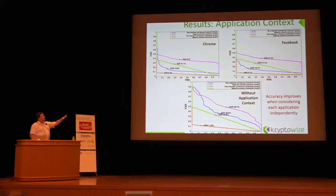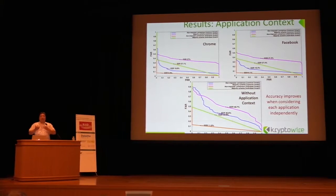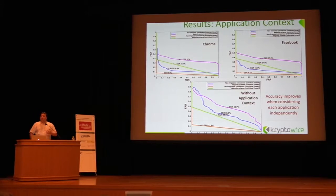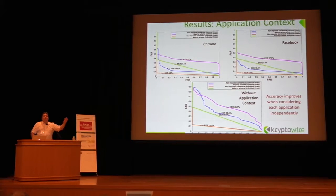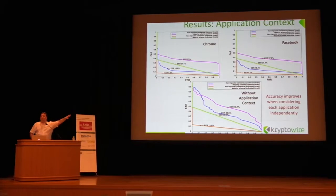Different applications yield different results, but the applications were fairly consistent individually. When I summed up the applications and removed what I call the application context — taking measurements without considering which application was in use — the data became non-deterministic and accuracy dropped. That's why, when we heard Google's I/O announcement that they would use biometric authentication without taking into consideration the application context, to me that is not going to be accurate, because the way we use applications significantly changes how the measurements have to be collected and considered.